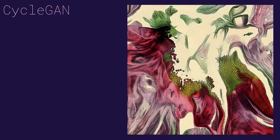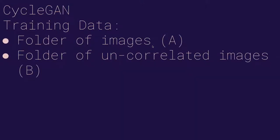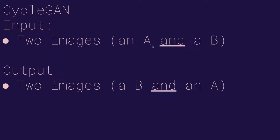CycleGAN is another model similar to Pix2Pix but weirder. The classic example is zebras to horses — unpaired image sets where it generalizes their translations. The training data is 300 images of horses and 300 images of zebras — uncorrelated. The machine tries to figure out how to connect them. This is different from Pix2Pix: it's a folder of images A and a folder of uncorrelated images B. Once trained, your input needs to be two images — a horse and a zebra — and it outputs both translations.